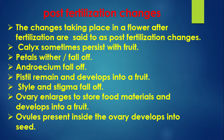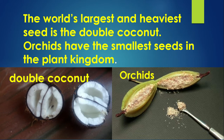Post-fertilization changes: The changes taking place in a flower after fertilization are called post-fertilization changes. Sepals sometimes persist with fruits. Petals wither or fall off. Androecium falls off. The pistil remains and develops into a fruit; style and stigma fall off. The ovary enlarges to store food materials and develops into a fruit. Ovules present inside the ovary develop into seeds. The world's largest and heaviest seed is the double coconut; orchids have the smallest seeds in the plant kingdom.